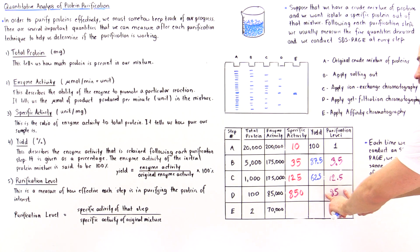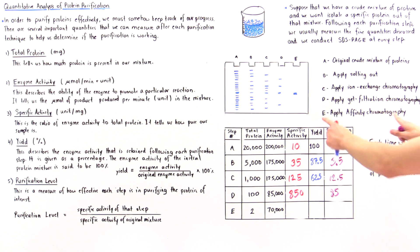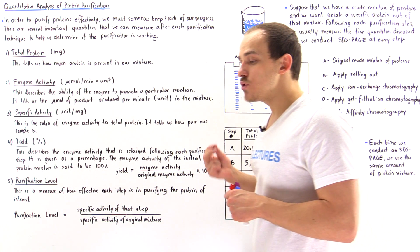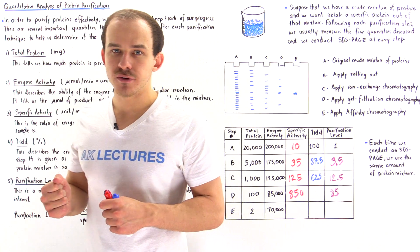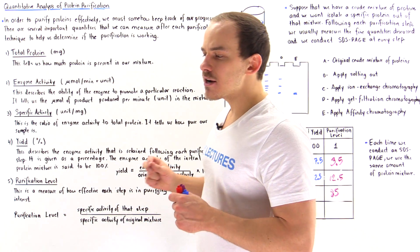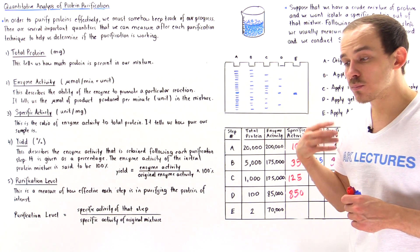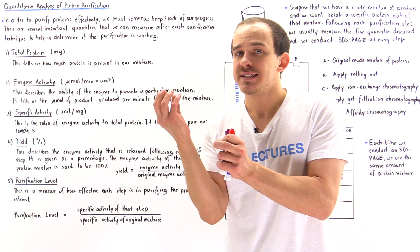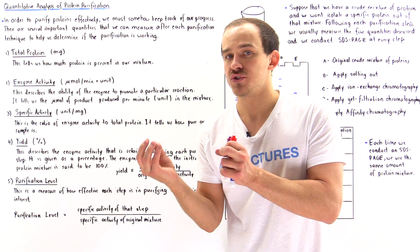In the final step, step E, we take our extracted mixture proteins and expose them to affinity chromatography. In affinity chromatography, we separate proteins based on their specific ability to bind to special molecules.